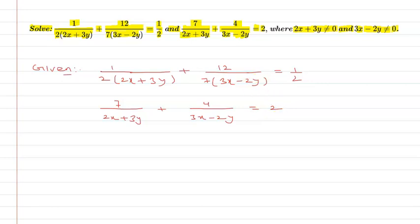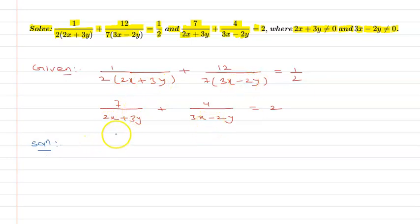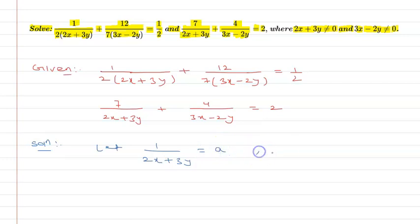When I have variables in the denominator, I can see that the expression 2x + 3y appears in both equations. Since the same expressions repeat, I will substitute them. Let 1 upon (2x + 3y) equal to a and 1 upon (3x − 2y) equal to b.